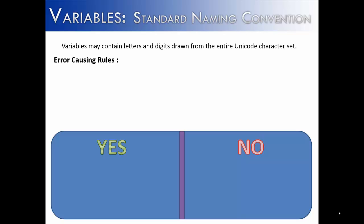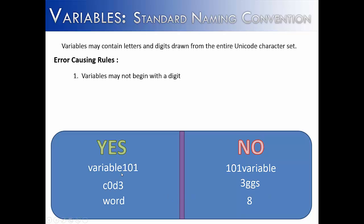Variables can be named pretty much anything using a keyboard, but there are some rules that must be followed. The first error-causing rule is variables may not begin with a digit. They have to be alphanumeric — start with an alpha character, and then they can have as many digits inside as you please. So I have some examples here. Variable101 does not begin with a number — it does have a number at the end, which is perfectly okay. Code, where the O and the E are substituted for a 0 and 3, is also okay.